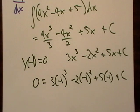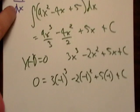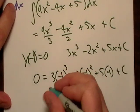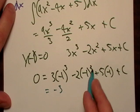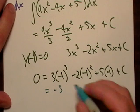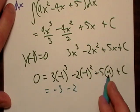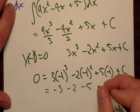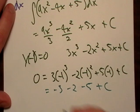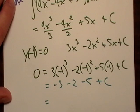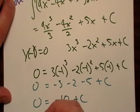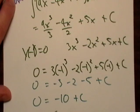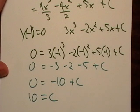Right off the bat, we know that negative one to the third, that's still negative three. So this is going to be negative three. Negative one squared is positive one. So that's negative two, negative five, plus c. So it looks like zero is equal to negative ten plus c. So that's actually going to make c equal to ten.